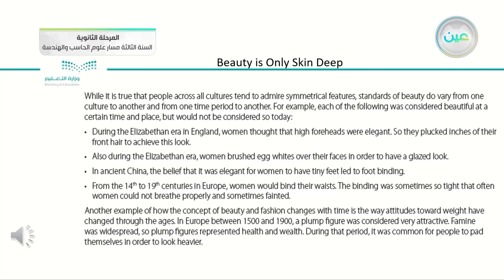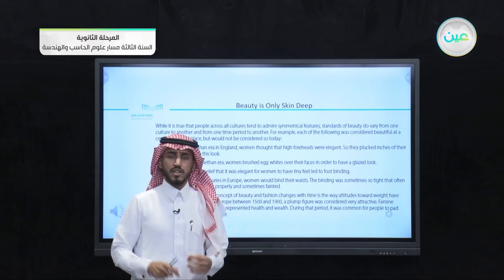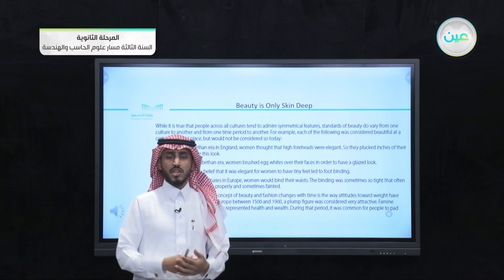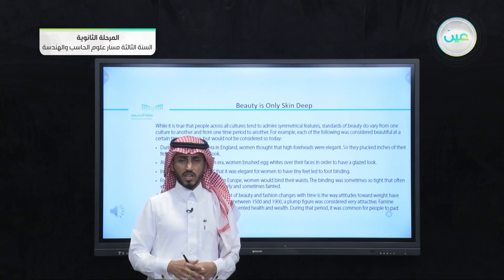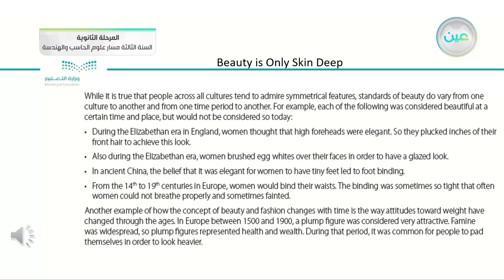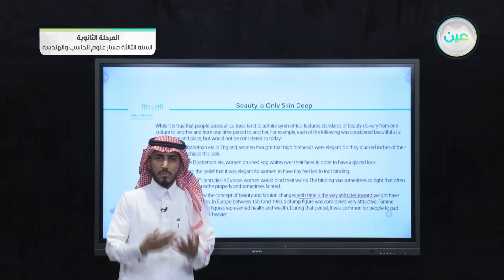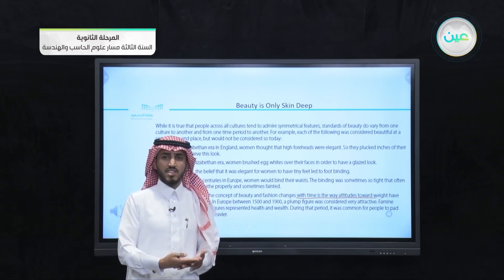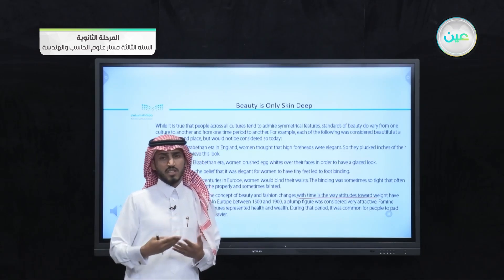Some of the words here we will shed light on: the first one is plump, which means a chubby or stocky person — one of the words we studied in the previous lesson. Another word is attitude. The way attitudes toward weight have changed throughout the ages — the word attitude means behavior, the way people behave toward these things, how they looked at them in the past and how they look at them nowadays.